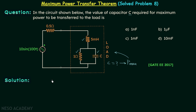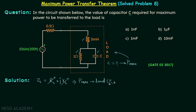We know the condition for maximum power transfer when both RL and XL are variable in the load impedance. When you find the load impedance ZL, you get RL plus j·XL. In this problem both RL and XL are variable, so maximum power is transferred to load ZL when ZL equals the complex conjugate of the Thevenin impedance.